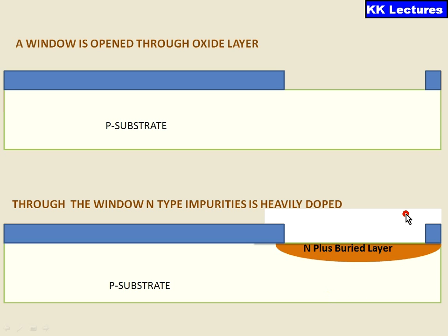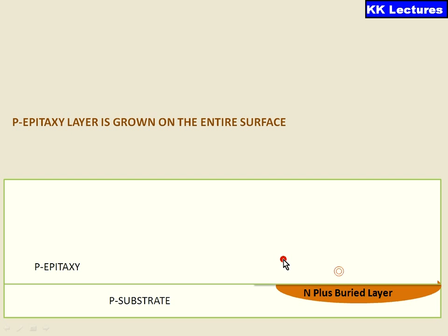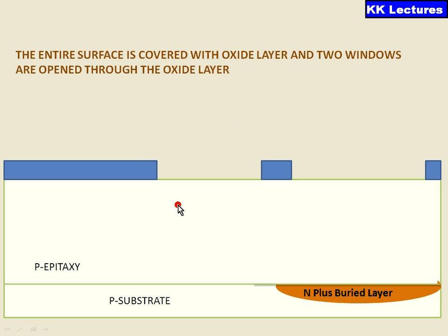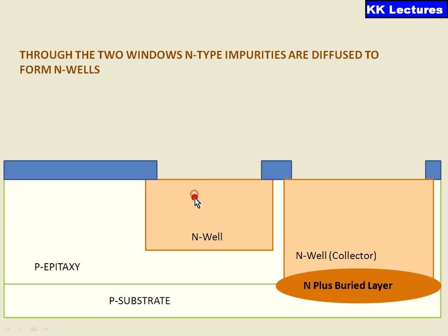Why are we making this N-plus buried layer? To accommodate your BJT transistor. On top of the p-type substrate, I am growing a p-type epitaxial layer over the entire surface, which is used to protect your N-plus buried layer. Then, after placing the oxide layer, we place a mask, pass UV rays, and remove selected areas by etching to form windows on the surface where transistors will be formed. Through two windows, N-type impurities are diffused to form the N-wells. One N-well is for your PMOS, and the other N-well acts as a collector for your bipolar junction transistor.